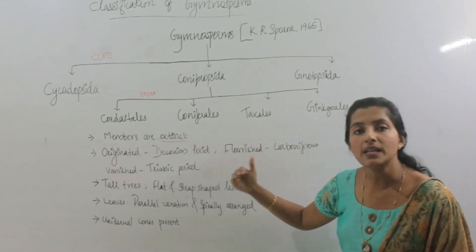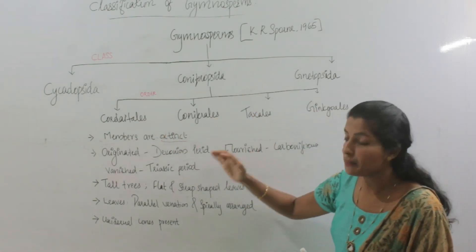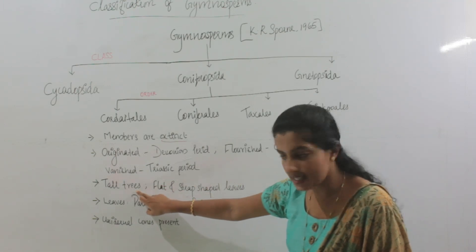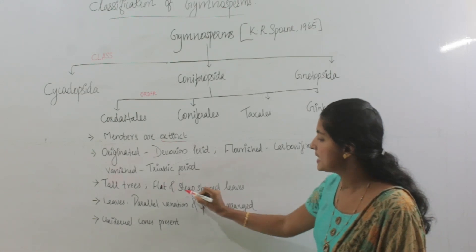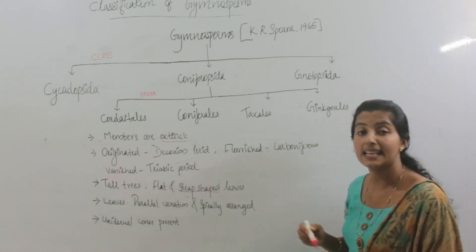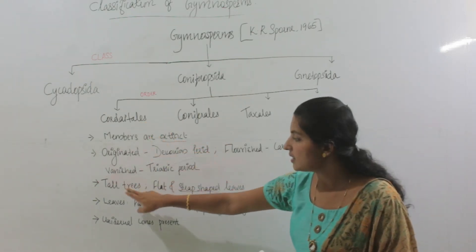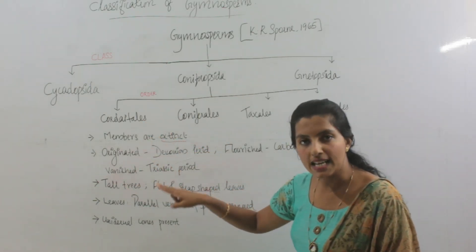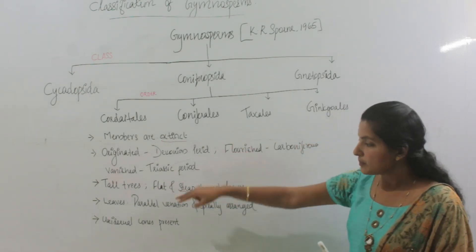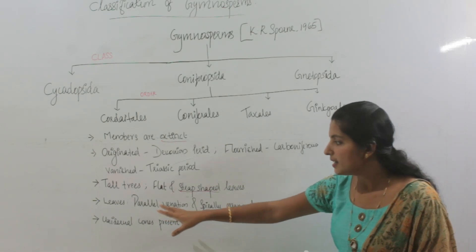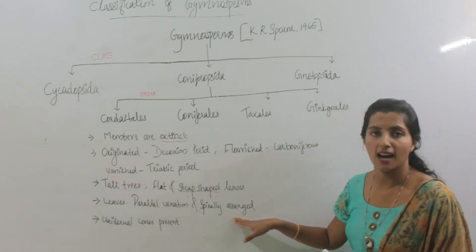The habit of the trees in Cordaitales: the members were tall trees with flat and strap-shaped leaves. The leaves possess parallel venation and are spirally arranged.